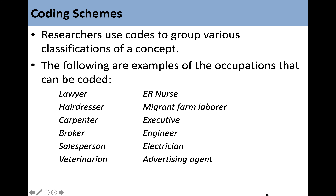Researchers use codes to group various classifications of a concept. Examples of occupations that can be coded include lawyer, hairdresser, carpenter, broker, salesperson, veterinarian, ER nurse, migrant farm worker, executive, engineer, electrician, and advertising agent. If you put all these together, you might think there should be 12 different codes, but the reality is that may not be what you're looking for.